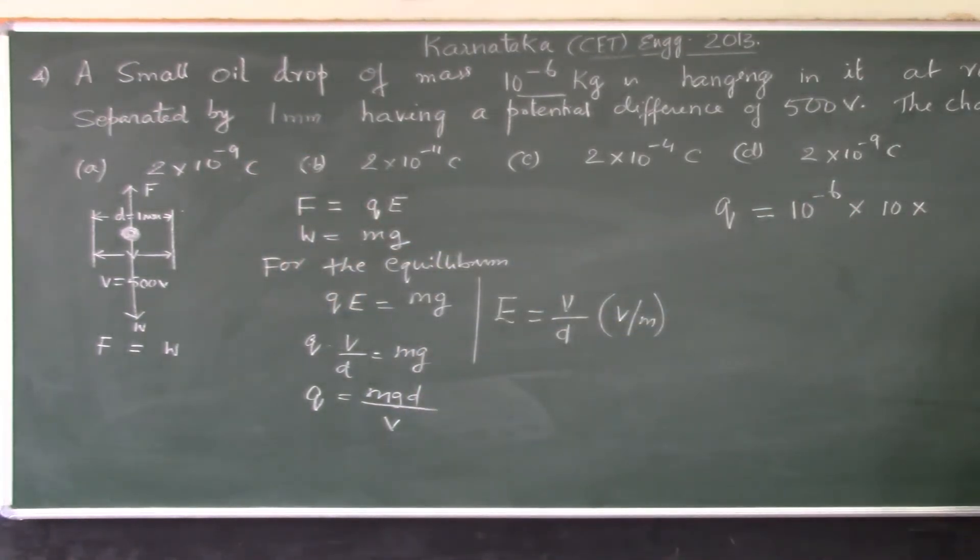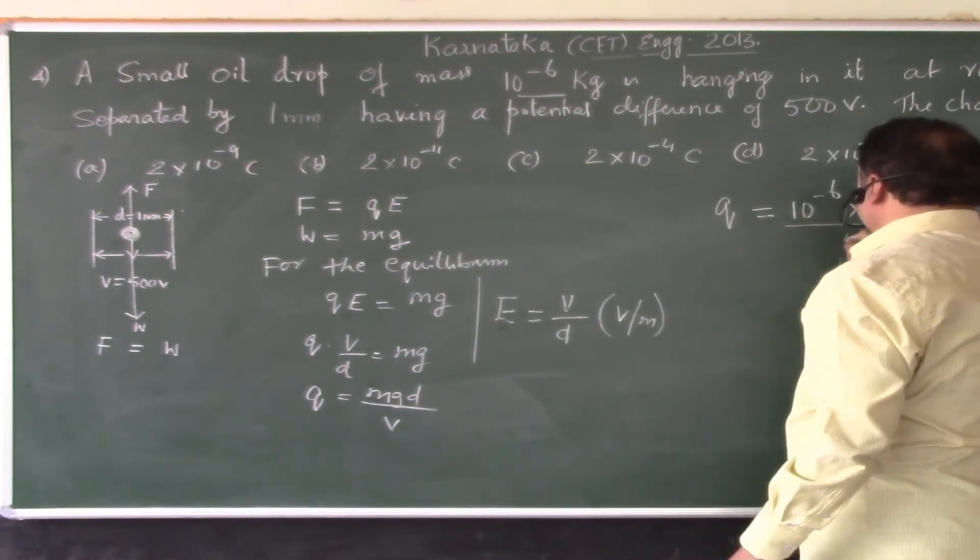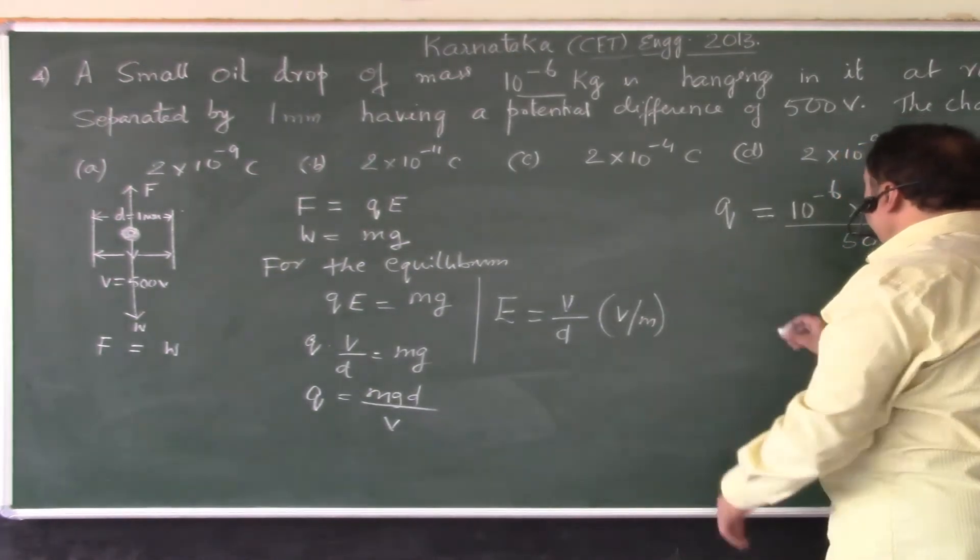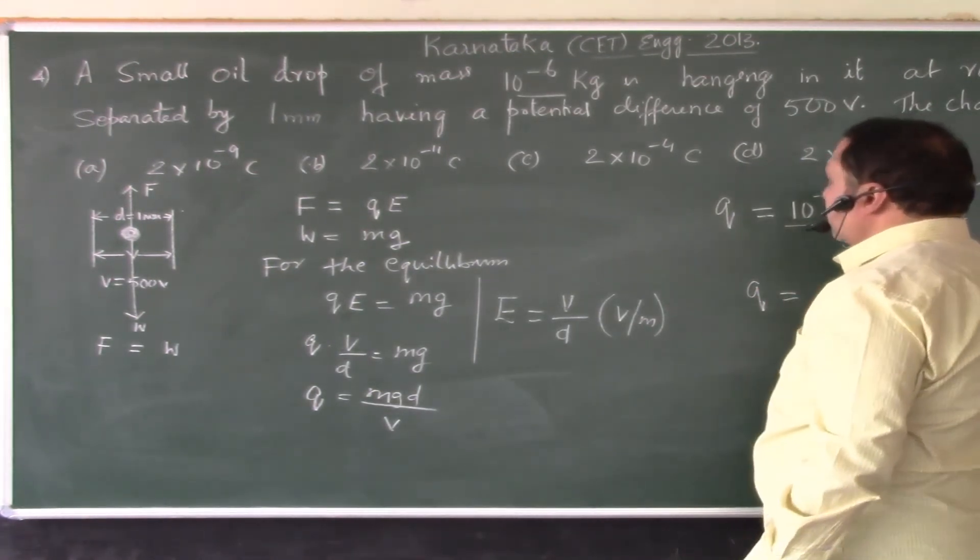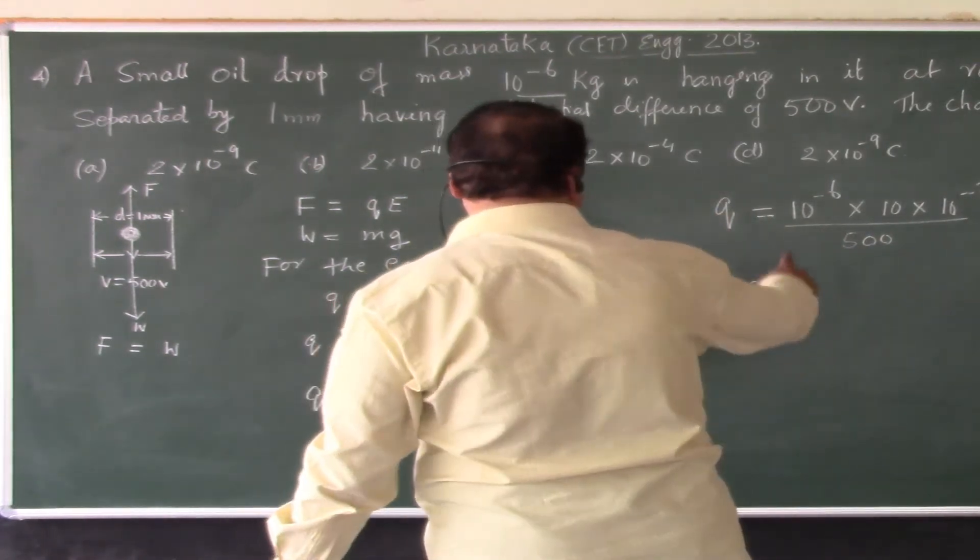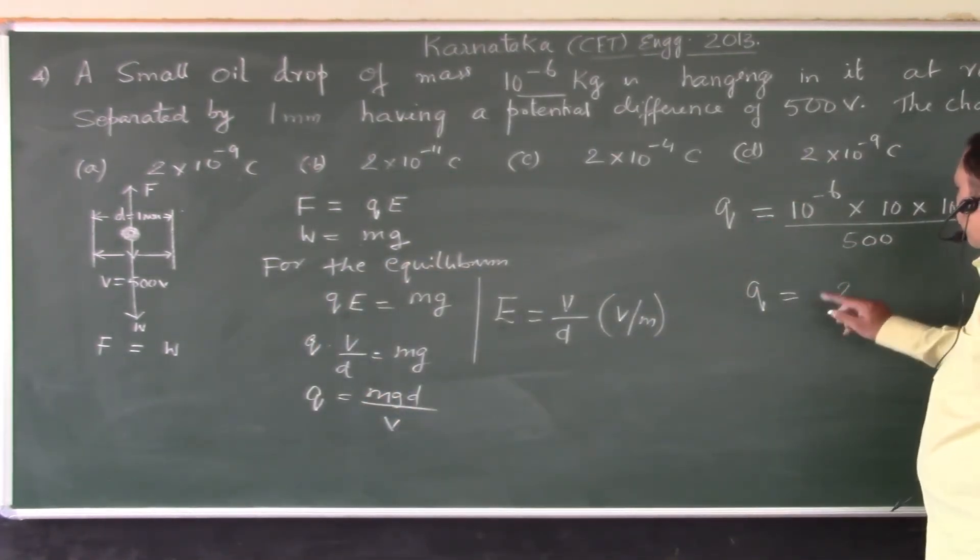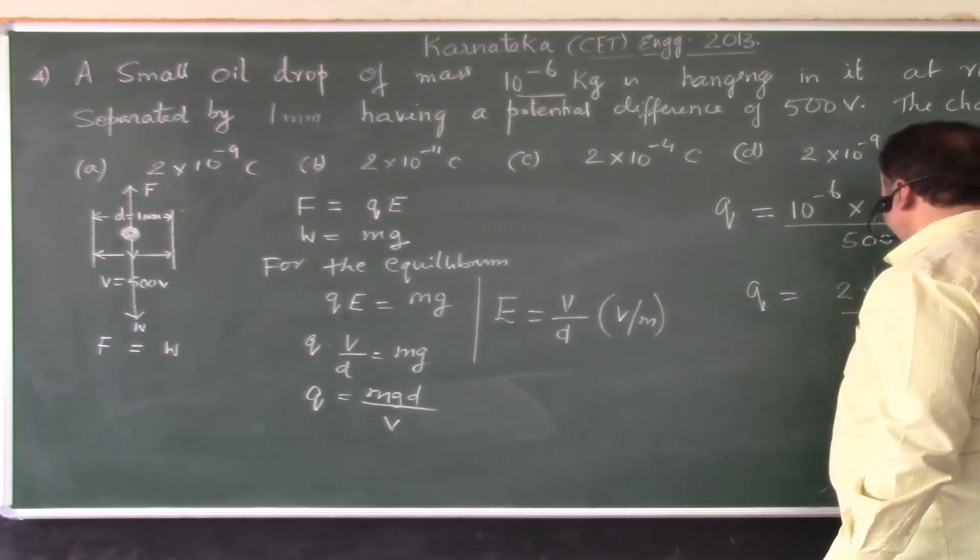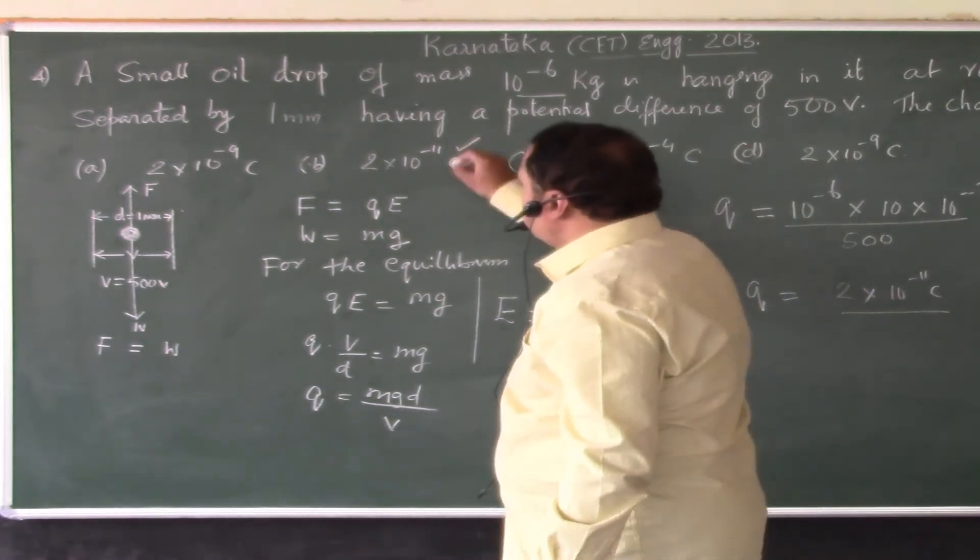1 millimeter in meters is 10 to the power of minus 3 meters. Divided by V is 500. On simplification, on simplifying all these numerator and denominator, we get Q equals 2 into 10 to the power of minus 11 coulomb, where option B is the right answer.